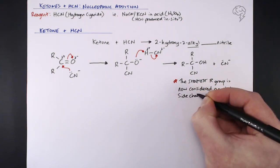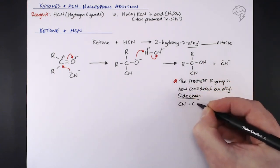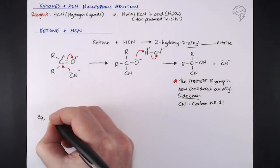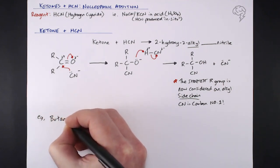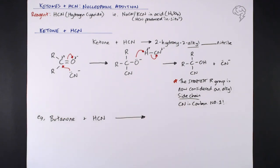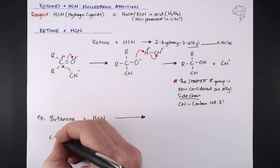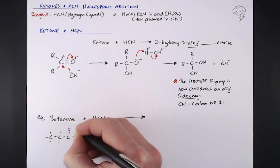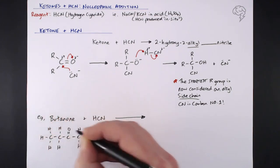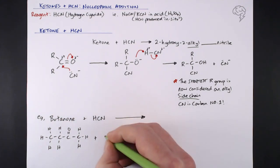The CN is carbon number one and must be part of the main chain. For example, if I react butanone with HCN - no need for a number for where that ketone is because there's only one place it can be in a four-carbon molecule. I'll set this up as a displayed formula with the carbonyl group on carbon number two, and put HCN in green so you can see where those atoms end up.